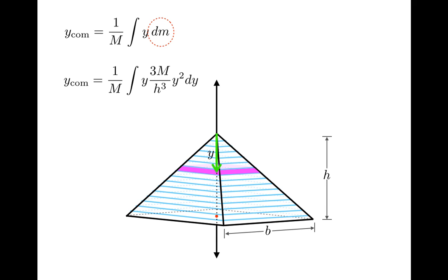Since the slabs range from the apex of the pyramid, where y is equal to 0, to the base, where y is equal to h, the limits of integration should be from 0 to h. So you can work out this integral, and you'll find that the result is that the center of mass is at three-fourths h.